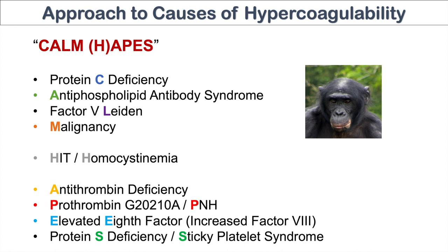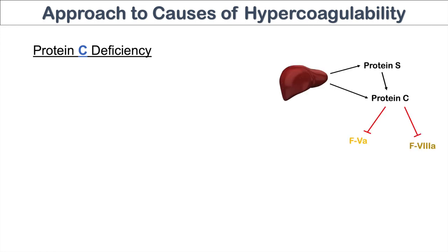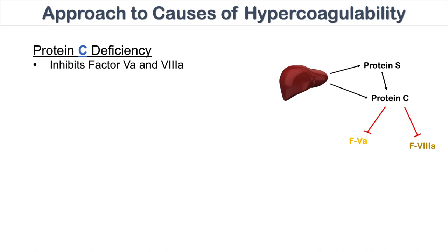We'll talk a bit more about specific causes of arterial thrombi in the next couple of slides. To delve in a bit more — protein C deficiency is important because the liver makes factors 2, 7, 9, and 10 for the coagulation cascade, but it also makes protein S and protein C. Protein C is an inhibitor of both activated factor V and activated factor VIII. So if we have a deficiency of protein C, we are unable to inhibit activated factor V and activated factor VIII, which increases the coagulation cascade and hypercoagulation.